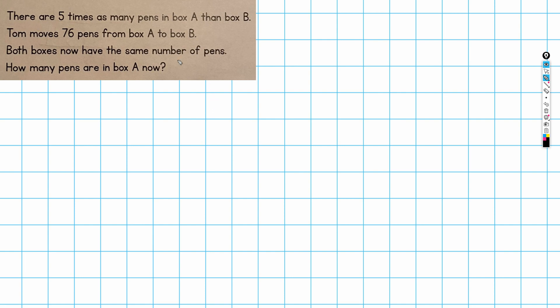So what is the question? Well, there are five times as many pens in box A than box B. Tom moves 76 pens from box A to box B. And both boxes now have the same number of pens. And we are asked how many pens are in box A now.